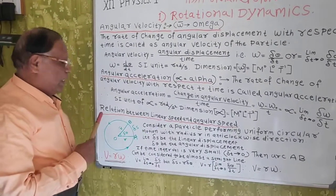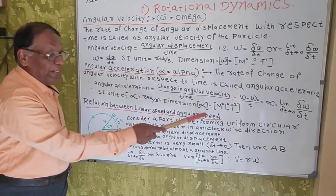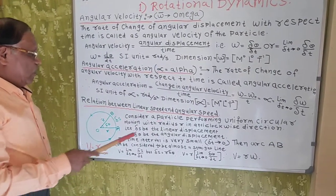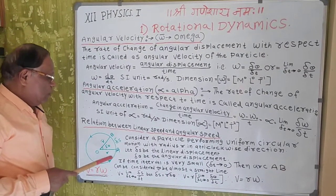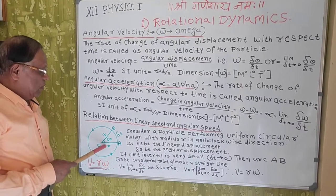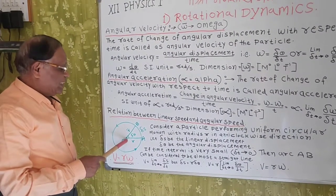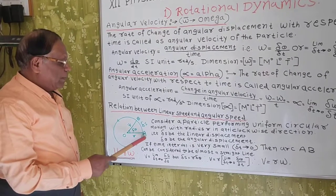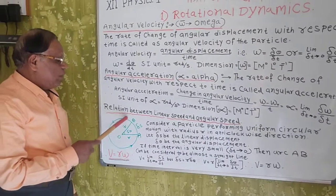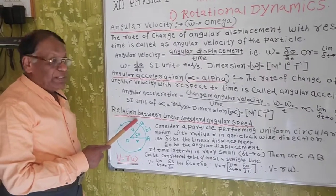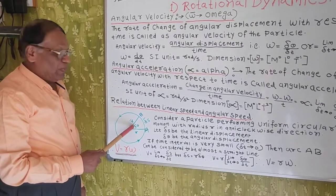Now we are going to study the relation between linear speed and angular speed. For this derivation, consider a particle P moving in the anticlockwise direction about the center O. Initially, the particle is at point A, and after a time interval of delta t seconds, the particle reaches point B, so that its angular displacement is delta theta.